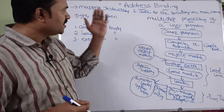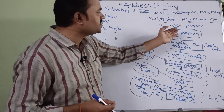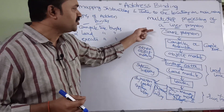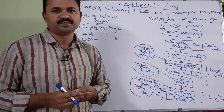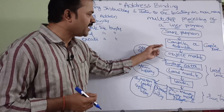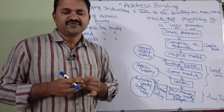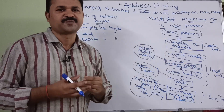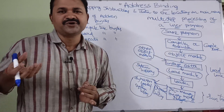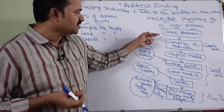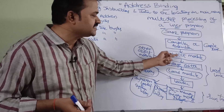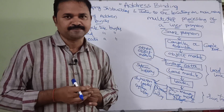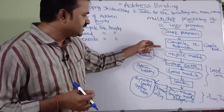Now let us see this diagram: multi-step processing of a user program. Here we have a source program, then a compiler or assembler. The compiler compiles the source program and produces an object file. The output of the compiler is an object module — a module is simply a file, that object file.